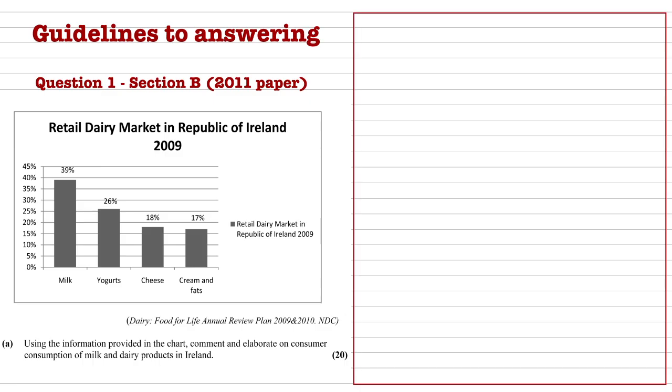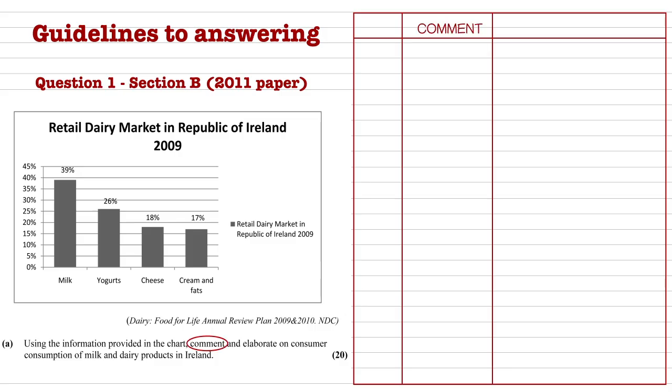Tabulate your answer for this question. Draw out the outline of the table on a rough worksheet of paper. First, highlight the two key terms in the question — there are two key terms every year. The two key terms in this question are Comment and Elaborate. These two terms are used for the headings for the vertical columns on the table.